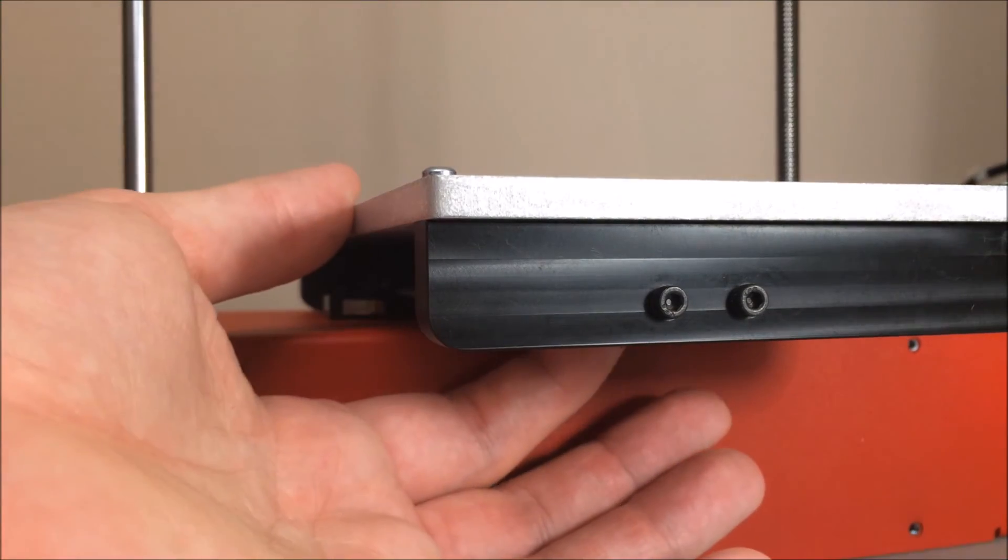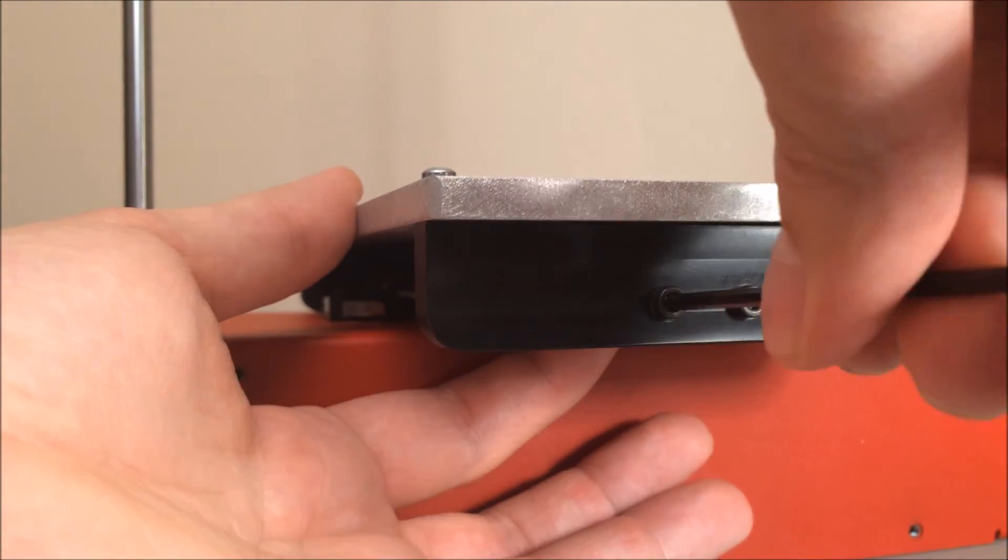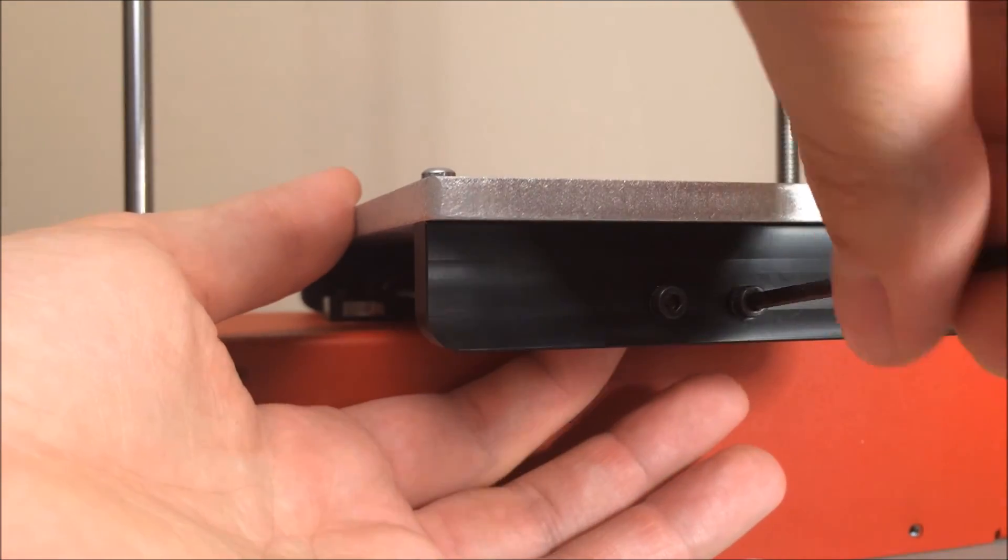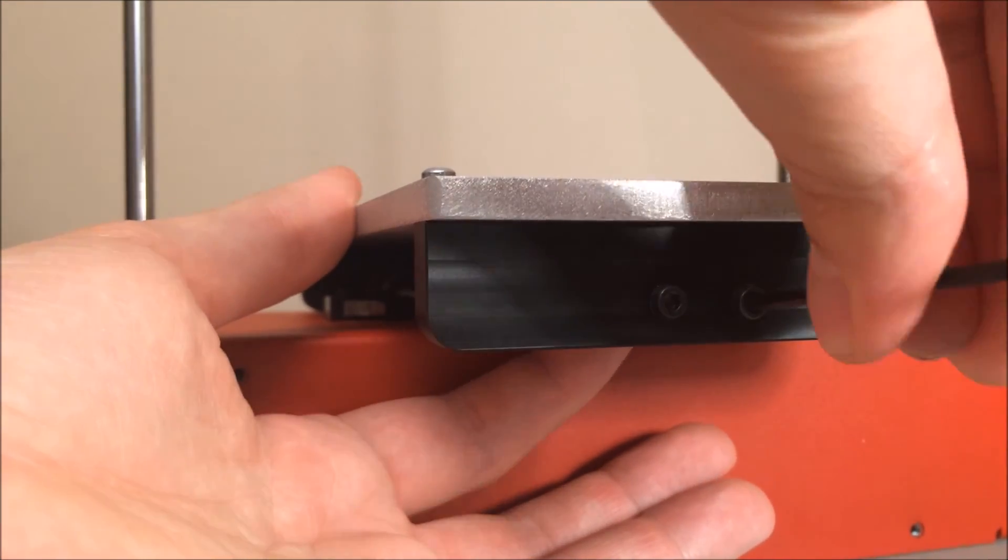Now with the bed in place to square everything up, you can tighten the tensioner screws as much as you want. I always hold the belt with one finger just to see how firm it is and tighten the screws until it feels right.